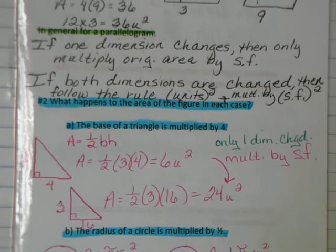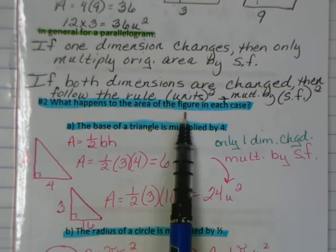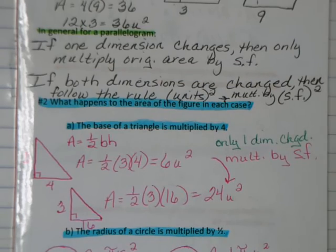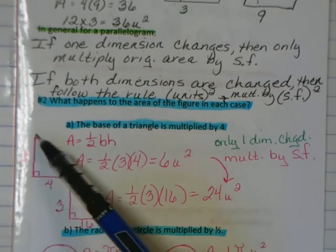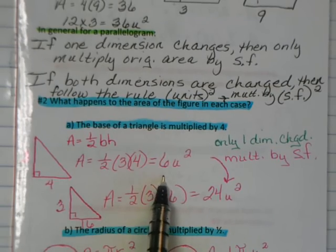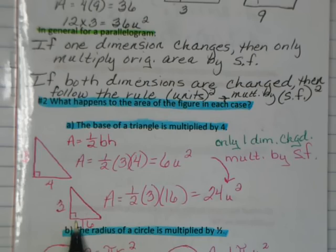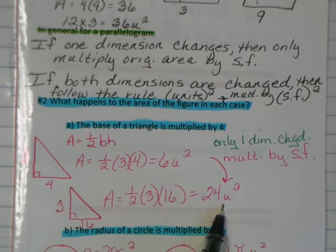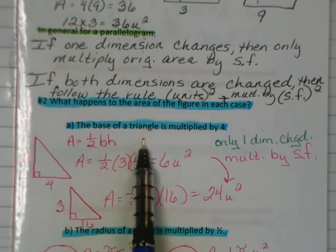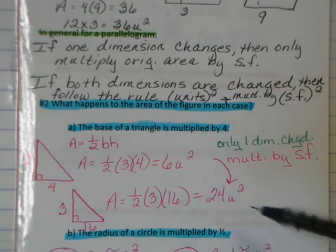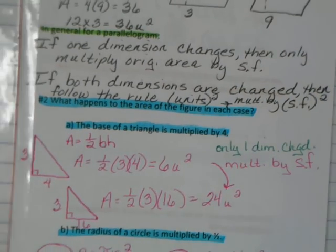Now let's move to number two. If you're a little confused, hang with me, and don't forget you can always rewind me. This says, the base of a triangle is multiplied by 4. Once again, I don't remember the rule, so let's make up something. I came up with 3 and 4, found my first area which is 6 units squared. They said to multiply the base by 4, so I did. I now have 16, height is the same. Multiplied it out and found it's 24. Once again, I only changed one of my dimensions, so I only multiply my original area by the actual scale factor itself.